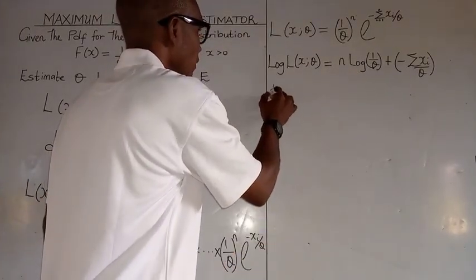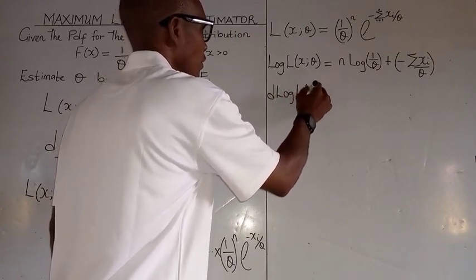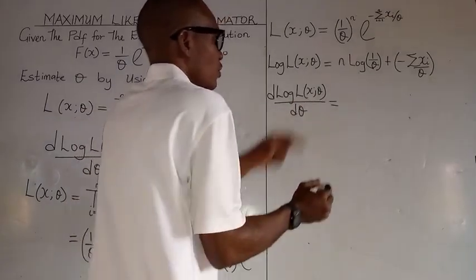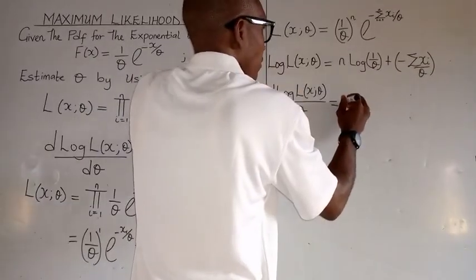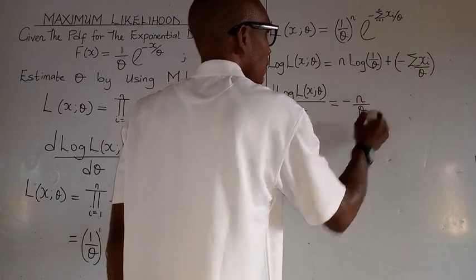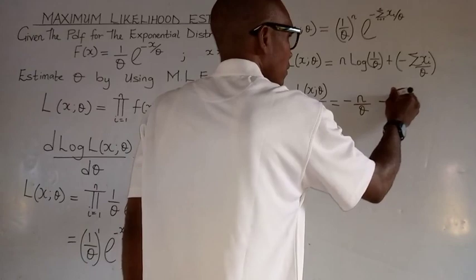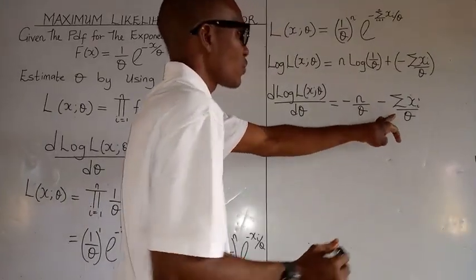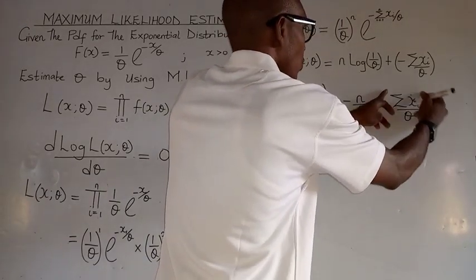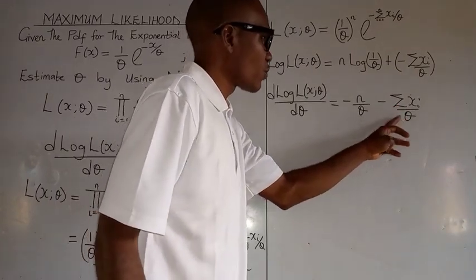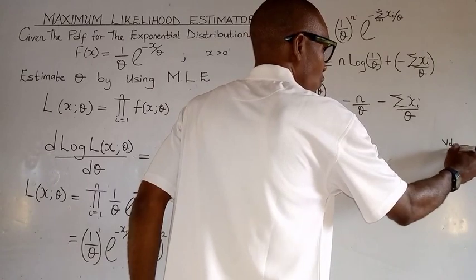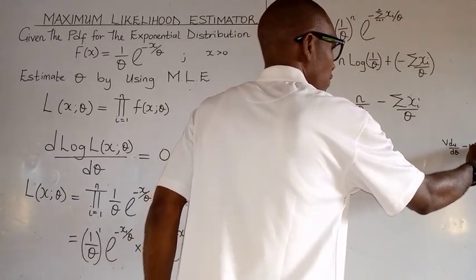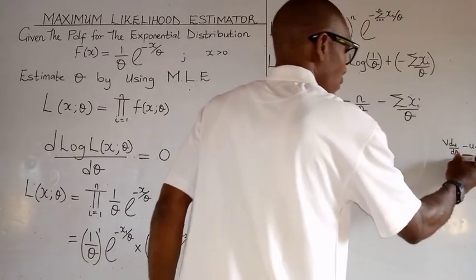The next thing to do is to take the differential log of this function. If we take the differential, we differentiate with respect to theta. Because of this term, we have minus n over theta. This sign is minus summation of x_i over theta, but we have not differentiated that yet. So what we do is use the quotient rule: v times du over d-theta, minus u times dv over d-theta, all over v squared.